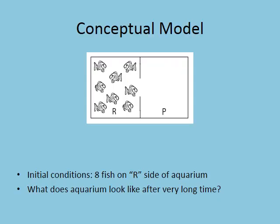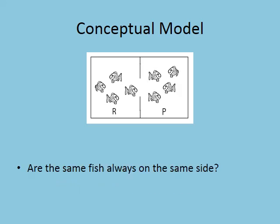Here's my conceptual model. My professors in my undergraduate years actually did this - they stuck fish in aquariums with dividers down the middle and studied the equilibrium among fish. As a mental exercise here, I've got eight fish on the reactant side of this aquarium with a divider, and I want you to think about how these fish might divide themselves given enough time.